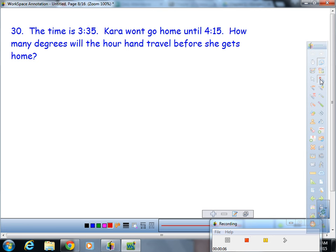The time is 3:35, so the minute hand is pointing at seven, the hour hand is somewhere past the three. This is not a typical clock problem. It says Kara won't go home until 4:15. How many degrees will the hour hand travel, so how far will this thing travel?